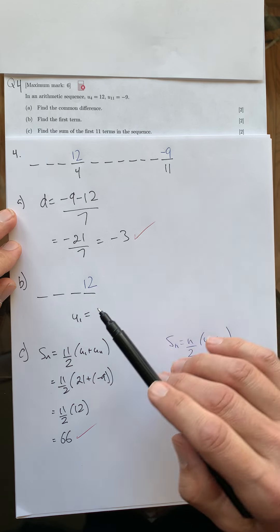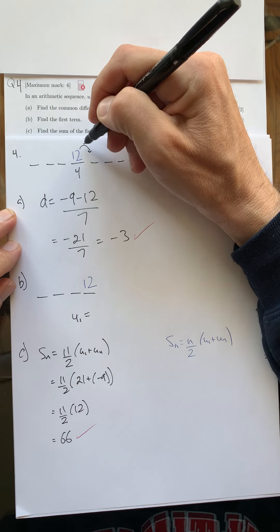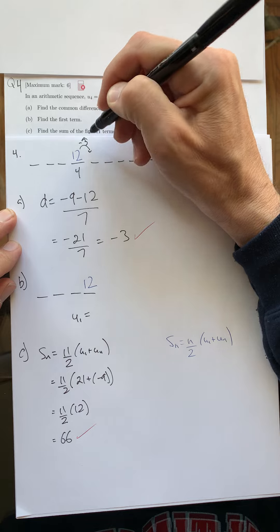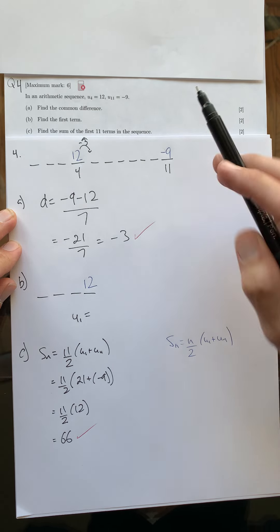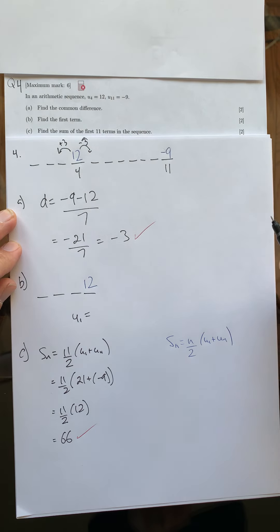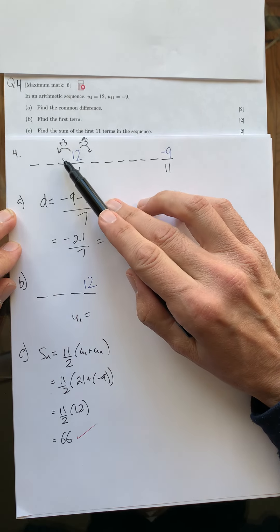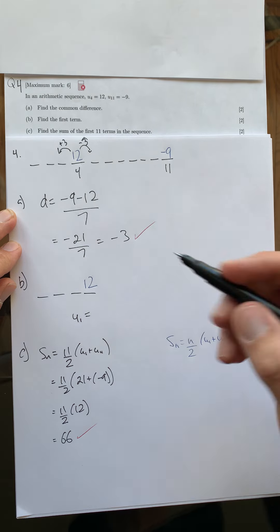And then part b, I want to find the first term. Well, I know if I'm going in this direction and my common difference is negative 3, I'm essentially subtracting 3 all the way down this way. And I know to go back up in this direction I would have to add 3. So I'd have 12 plus 3 is 15, plus 3 is 18, plus 3 is 21.